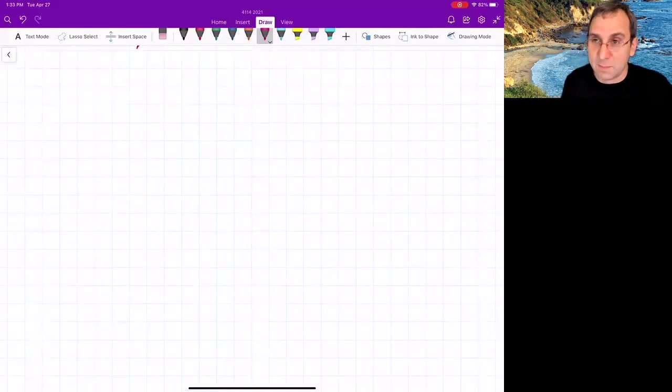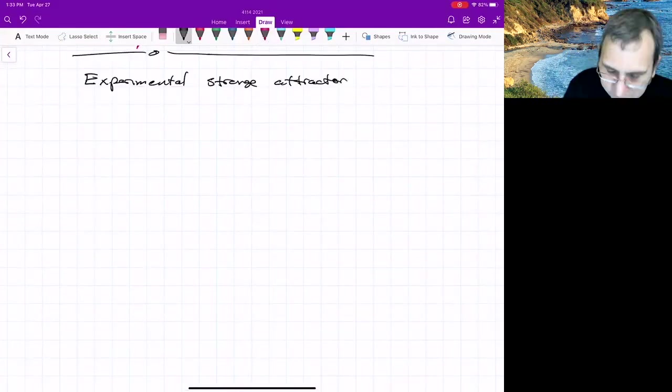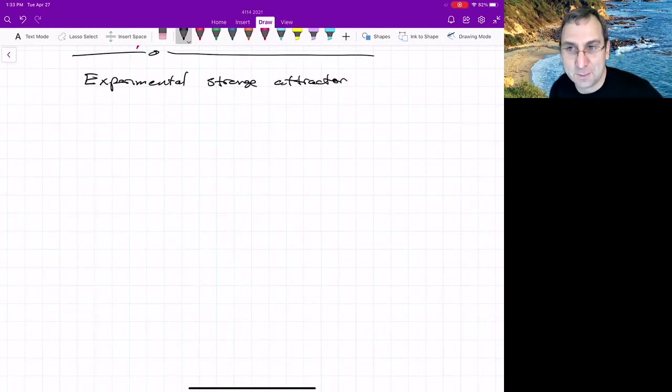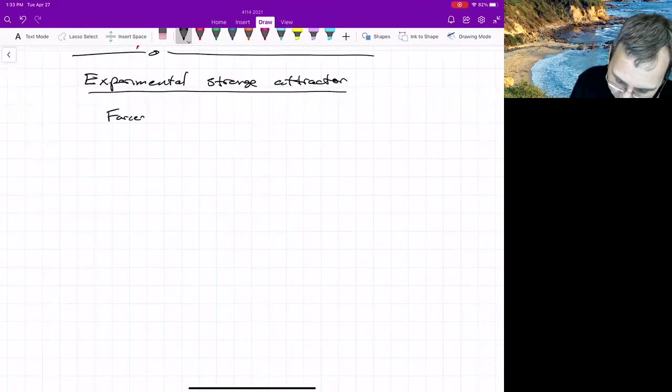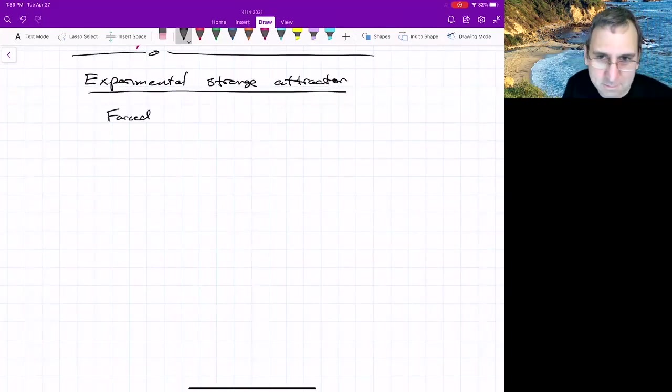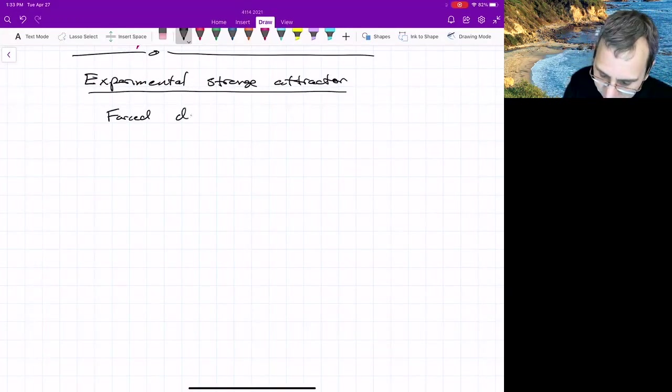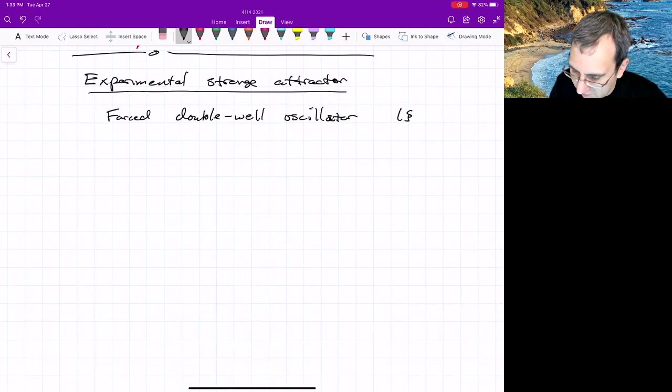Let me show you a system where you experimentally get a strange attractor. Like the others, the first papers go back to the 70s. And the main one that people looked at, because it's possible to do, was a forced double well oscillator. Some of this is described in section 12.5 of Strogatz.